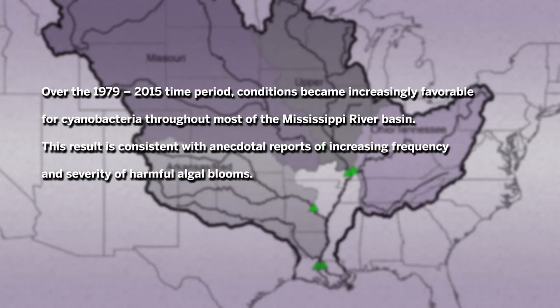Second, over the 1979 to 2015 time period, conditions have become increasingly favorable for cyanobacteria throughout most of the Mississippi River Basin, and this result is consistent with anecdotal reports of increasing frequency and severity of harmful algal blooms.